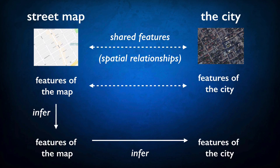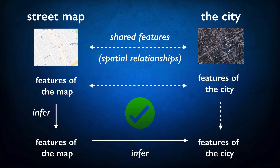I use this information to infer a conclusion about the most efficient way to navigate in the city. The map is a tool for reasoning and drawing conclusions about the city — the map stands in for the city in our reasoning about the city. Now this reasoning relies on the assumption that the shared features of the map and the city that we've used to construct the map captures the information we need to draw reliable inferences about the city. If it does, if our reasoning is successful, then we say, for these purposes, this is a good map of the city.